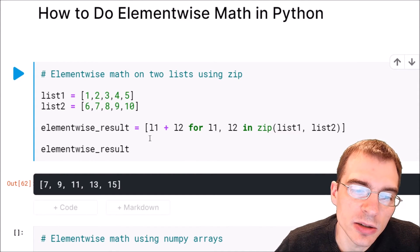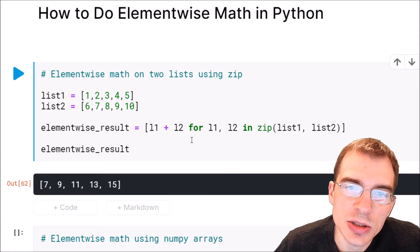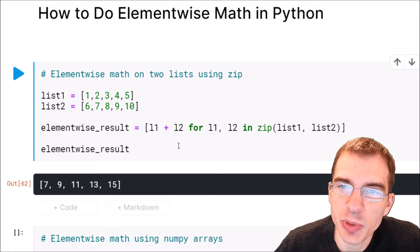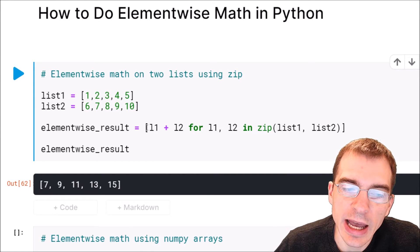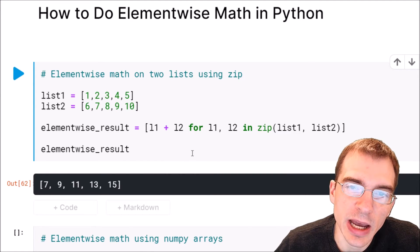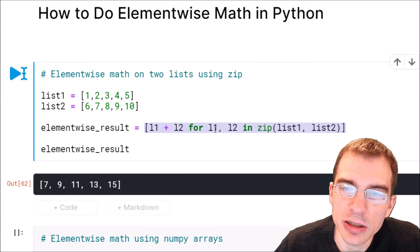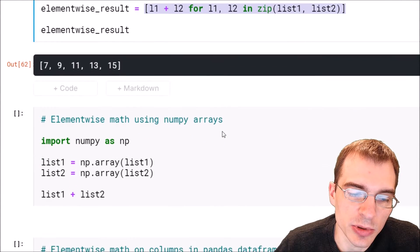Now, if you're going to be doing a lot of element-wise math operations, you should probably be using NumPy or pandas instead of base Python lists, because they have this sort of element-wise math built in. So you don't have to use this longer and somewhat more complicated list comprehension method. We'll show how we could do that below.